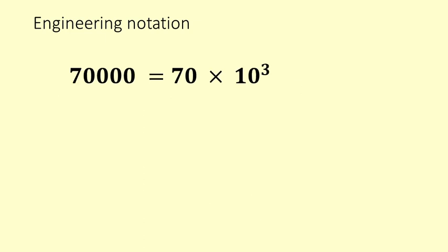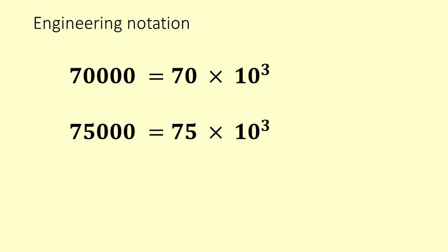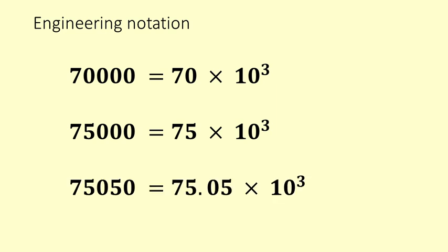What gets a little bit tricky with engineering notation — different from scientific notation — is that sometimes the number before the 10 to the power is going to be bigger than 10. So 70,000 is 70 times 1,000, or 70 times 10 to the power of 3. 75,000 is 75 times 10 to the power of 3. And 75,050 is 75.05 times 10 to the 3.